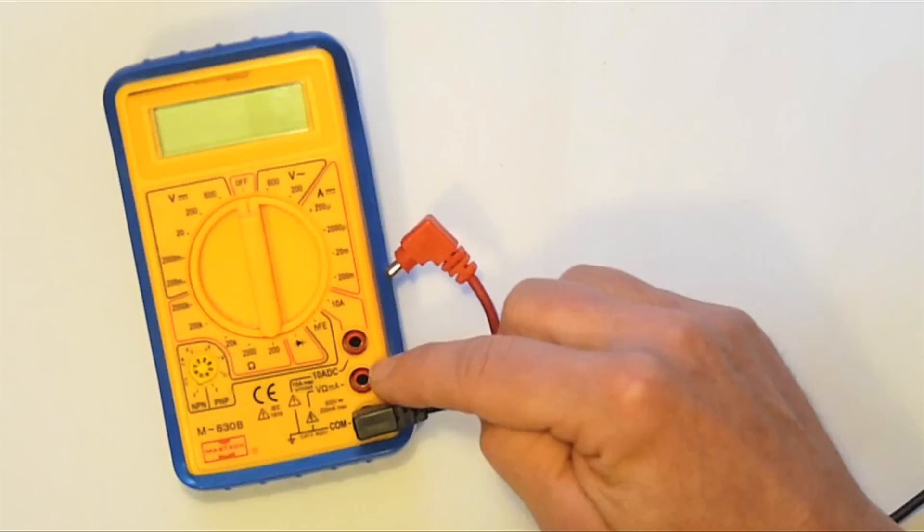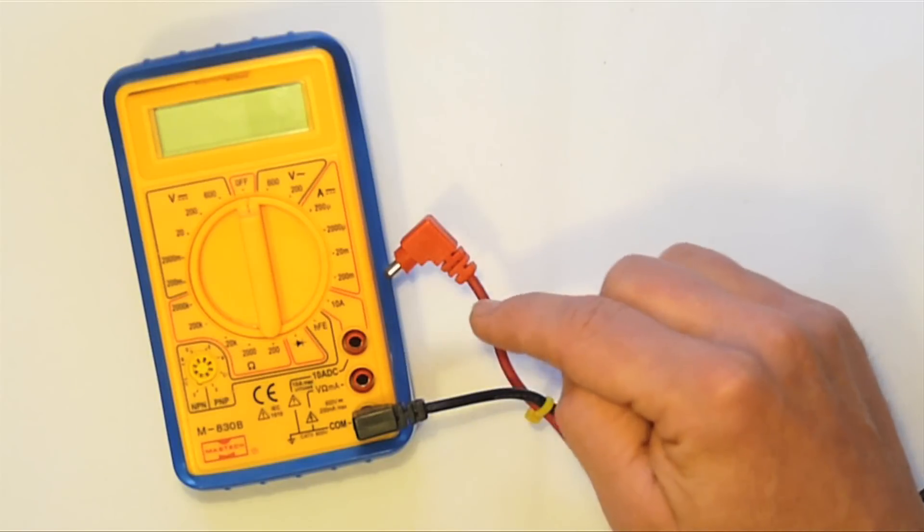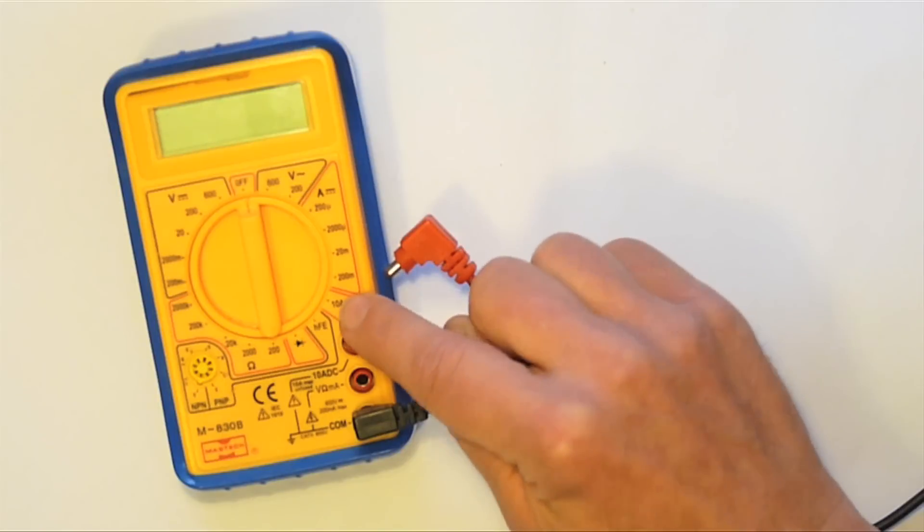On this multimeter there's just one voltage socket, this one marked V. However, if you're going to measure current there's a choice. If you've no idea of the size of the current then start here. This socket on this setting lets me measure currents up to 10 amps.